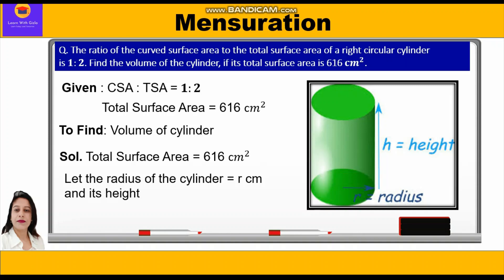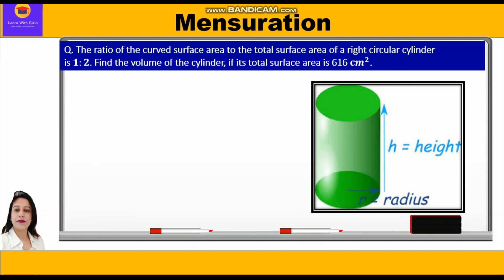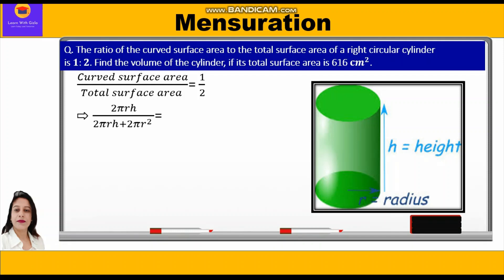Let us assume the radius of the cylinder is r cm and its height is h cm. The ratio of curved surface area to total surface area is 1:2, so we write: curved surface area / total surface area = 1/2. Substituting formulas: 2πrh / (2πrh + 2πr²) = 1/2.